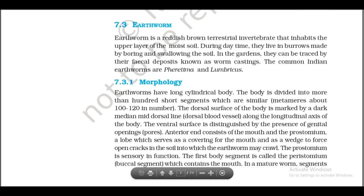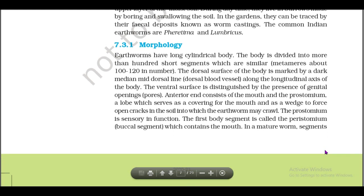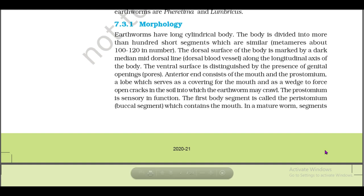7.3: Earthworm. Earthworm is a reddish-brown terrestrial invertebrate that inhabits the upper layer of moist soil. During daytime they live in burrows made by boring and swallowing the soil. In gardens they can be traced by their faecal depositions known as worm castings. The common Indian earthworms are Pheretima and Lumbricus.